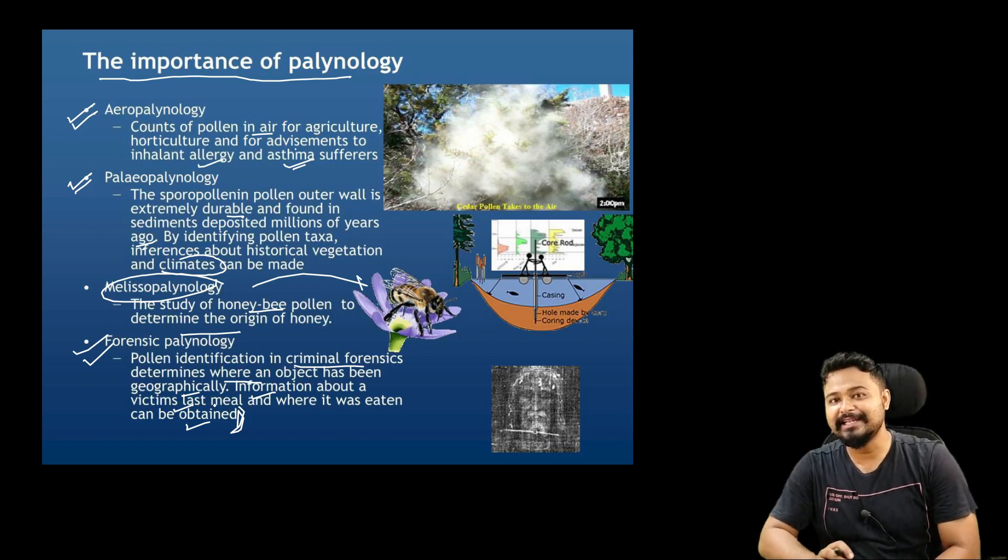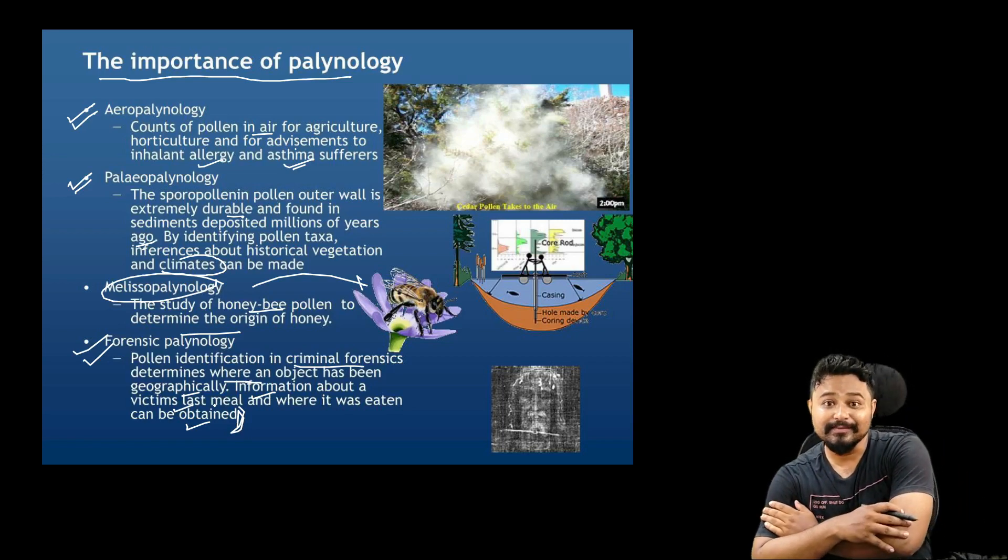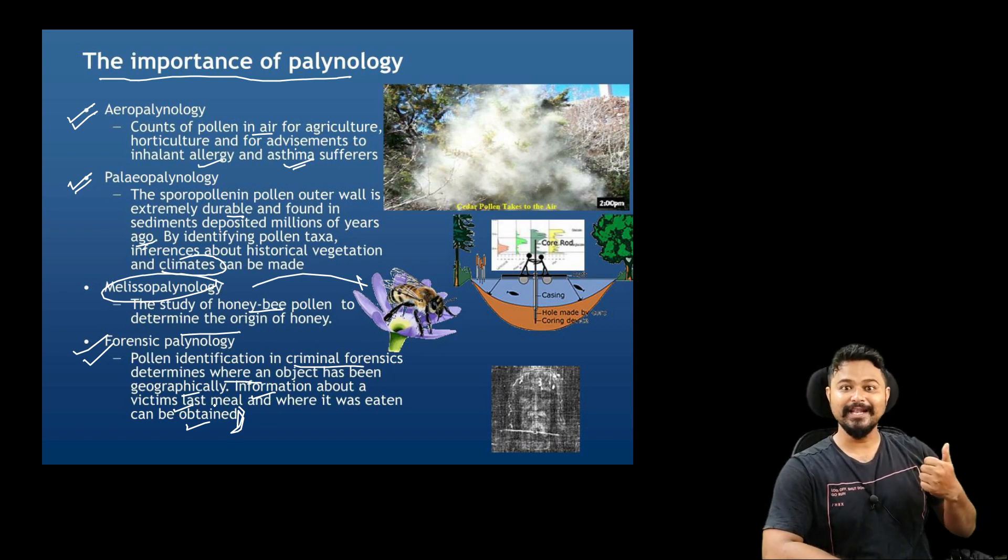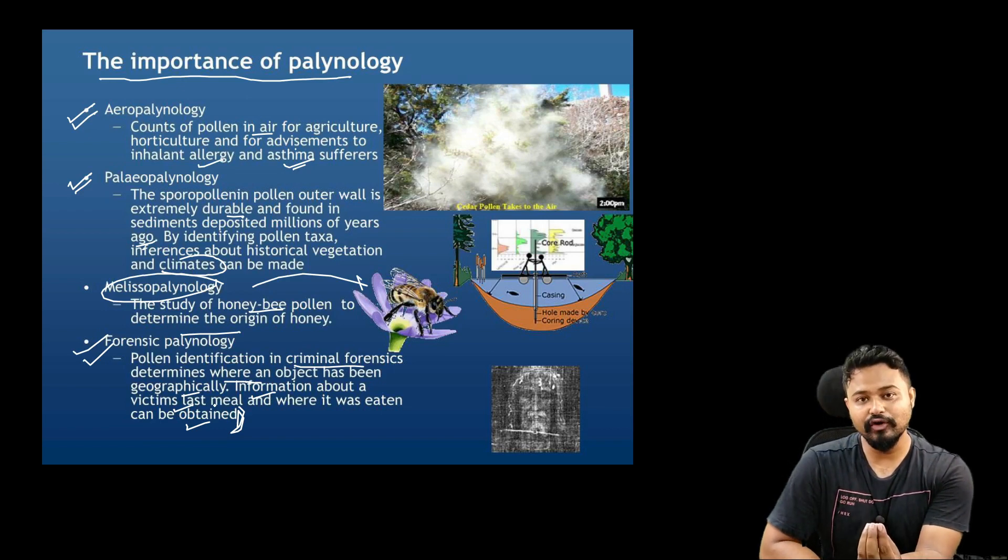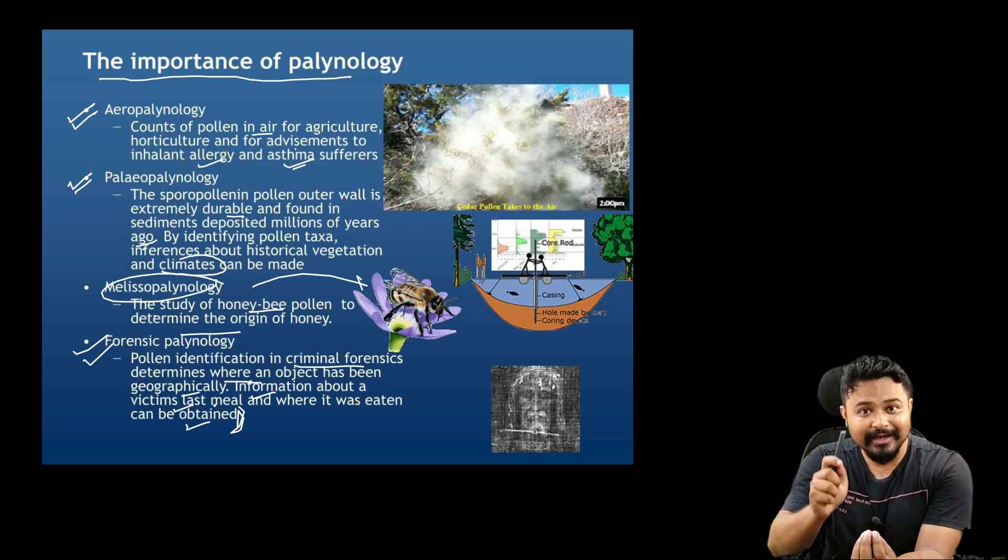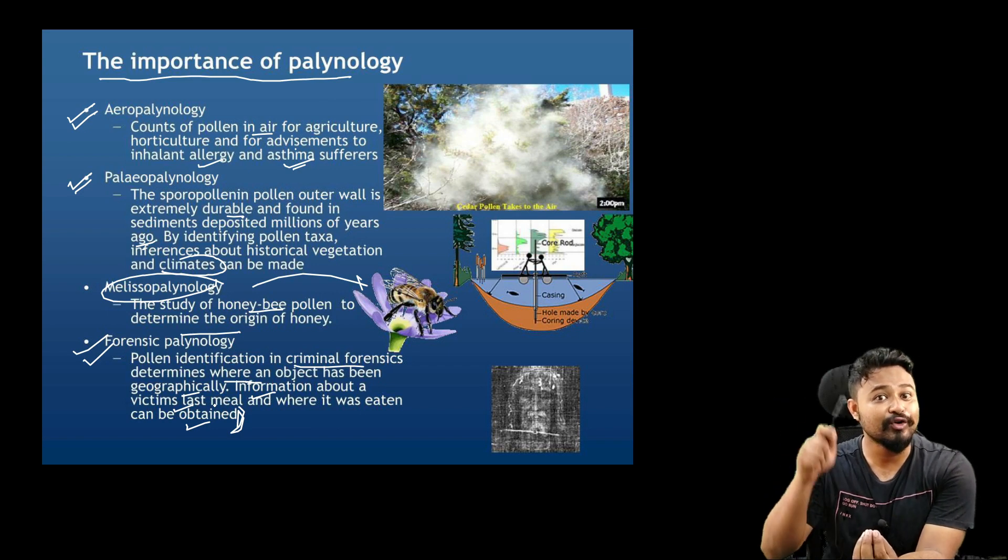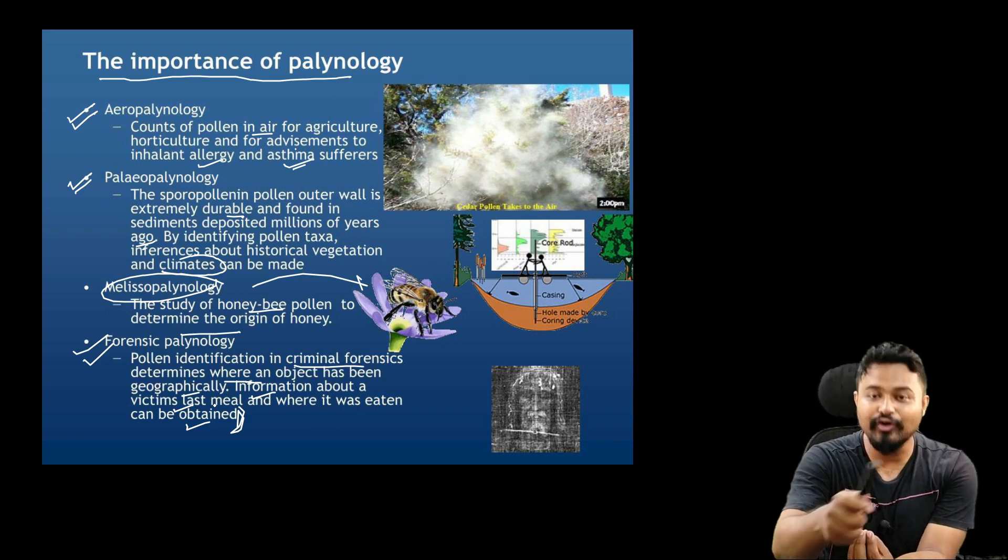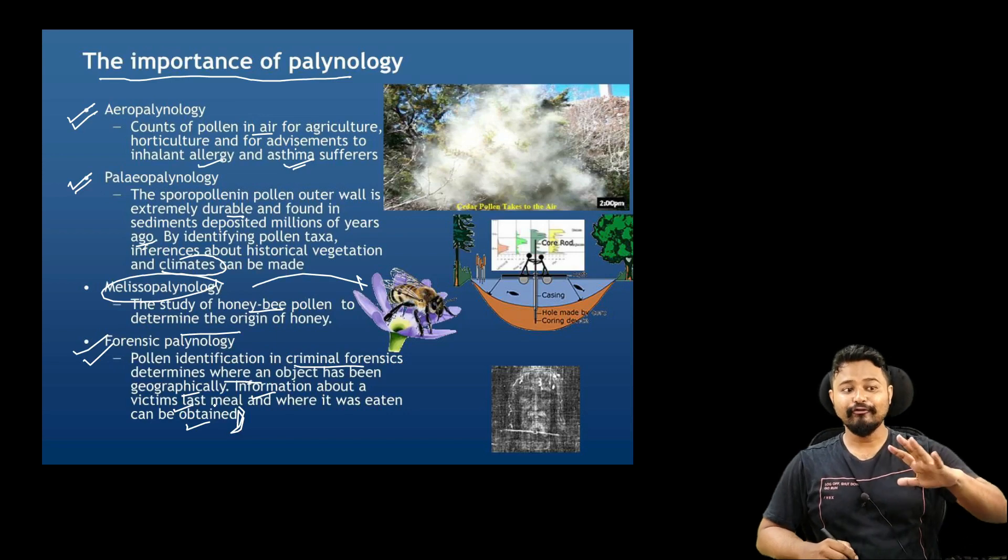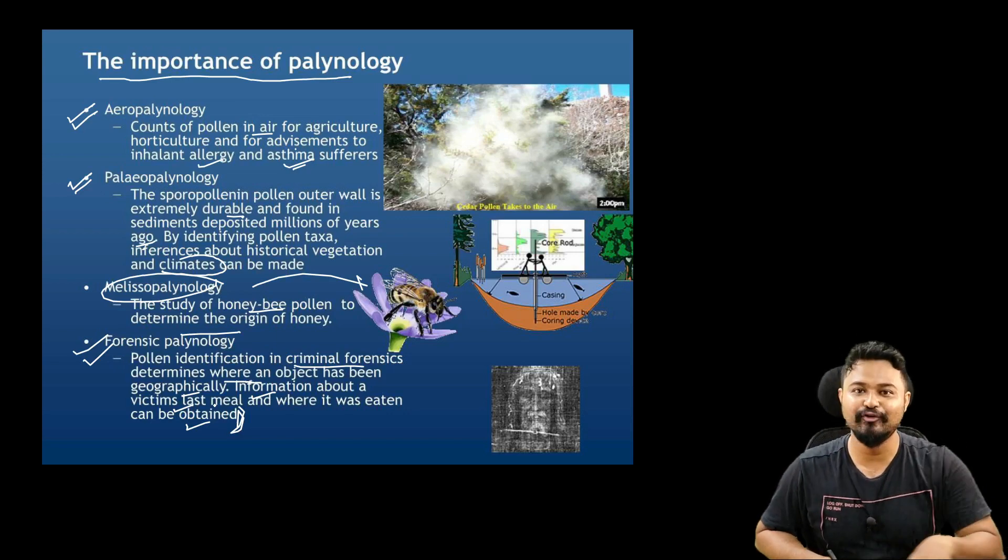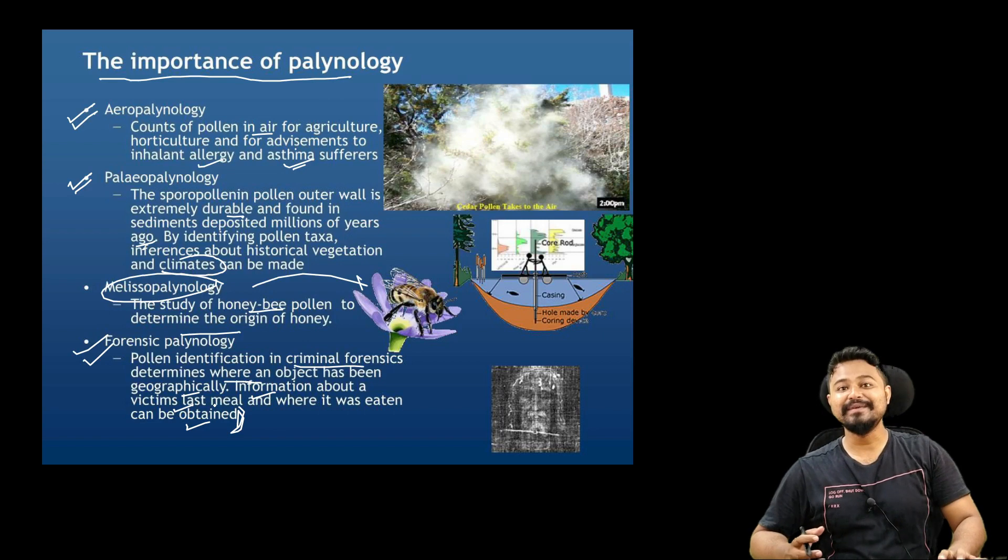For example, if some pollen is found in a criminal case, that pollen indicates the plant community of a particular area. So if a crime occurred and we want to know which area, we can check and survey to find where that plant community exists. The dead body or evidence contains pollen that helps in forensic investigation. We will learn this in depth in higher classes, not in this B.Sc. Semester.